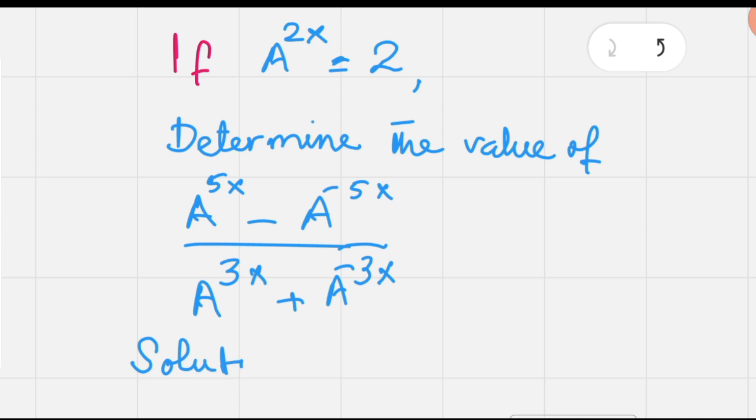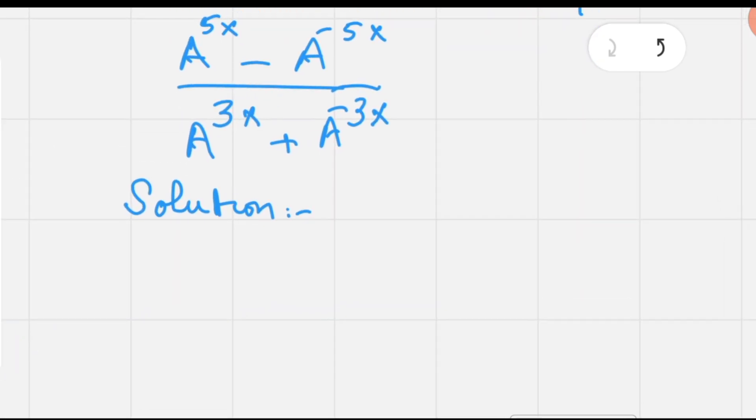In this video, we are going to determine the value of a fraction: A^(5x) minus A^(-5x) over A^(3x) plus A^(-3x), and we are given that A^(2x) is equal to 2.